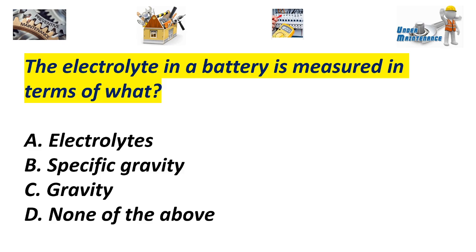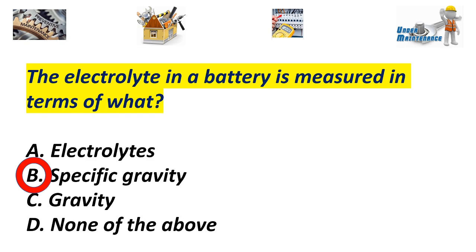The electrolyte in a battery is measured in terms of what? A. Electrolytes. B. Specific gravity. C. Gravity. D. None of the above. Answer B. Specific gravity.